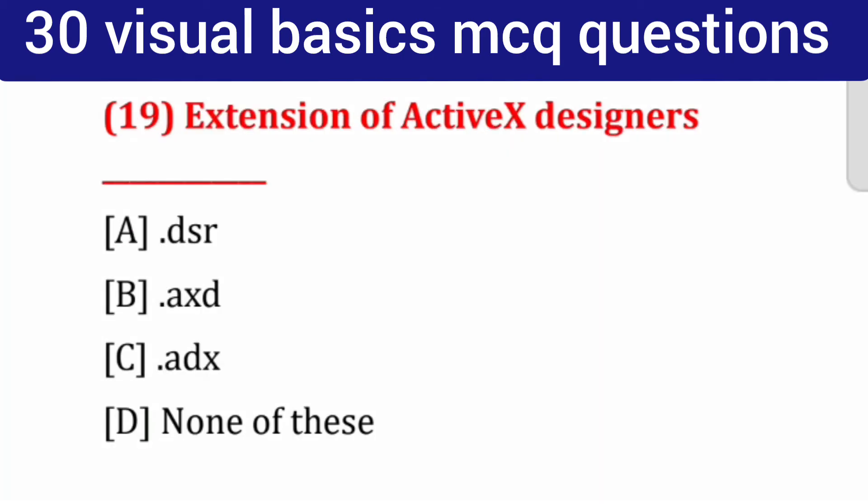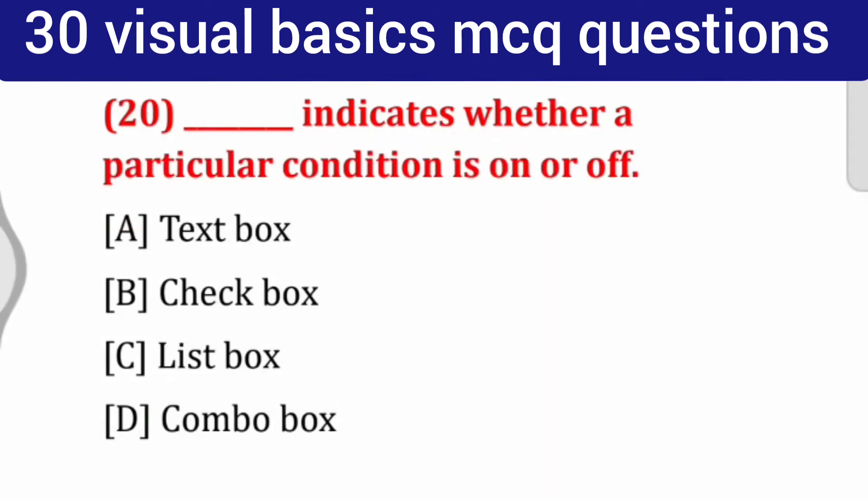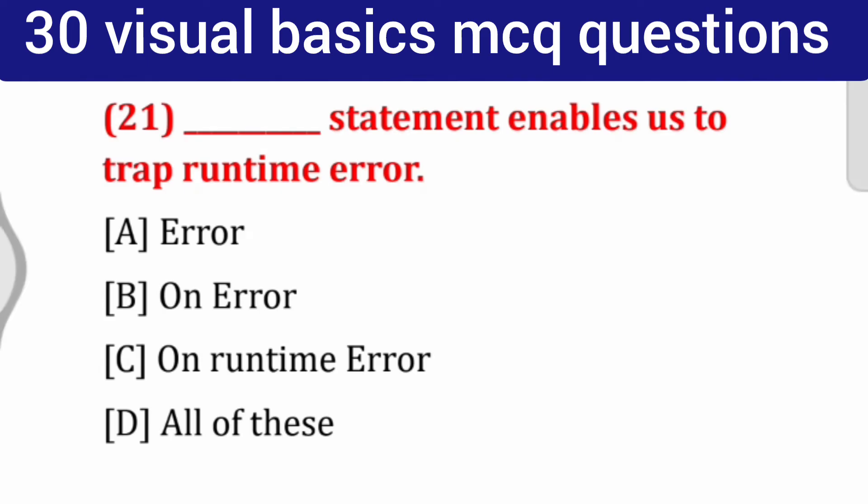Question number 19: Extension of Active X designers. Question number 20: ___ indicates whether a particular condition is on or off. Options: text box, checkbox, list box, combo box. Correct answer: checkbox. Question number 21: ___ statement enables us to trap runtime error. Options: error, on error, on runtime error, all of these. Correct answer: on error.